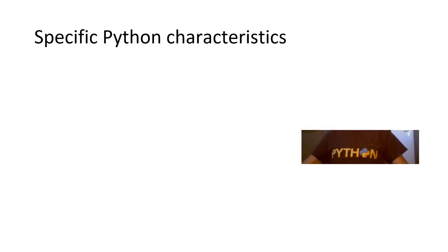Let's have a look at specific Python characteristics. Python is a general purpose language, which means it's not developed for a specific field but can be used for a whole range of purposes. It's also a high level language, meaning it's closer to the scientist — the scientist doesn't need to know all the bits and bytes and technical things that low level programming languages require.